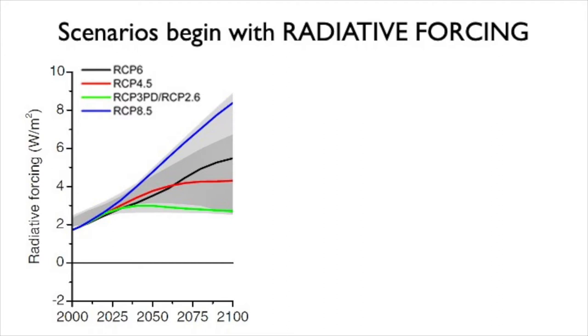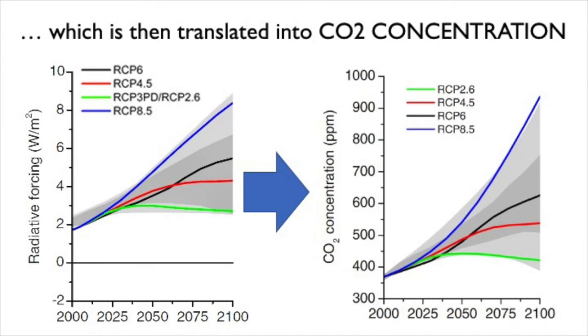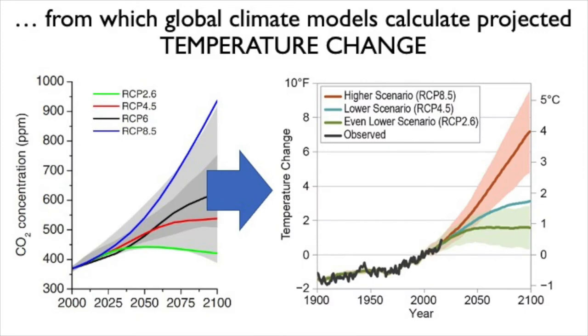Here are figures showing how this translation happens. The scenarios are radiative forcing scenarios in watts per meter squared — an RCP 6 means it reaches 6 W/m² by end of century, and RCP 8.5 reaches 8.5. These are first translated into carbon dioxide concentrations in the atmosphere, where the highest scenarios go up exponentially to maintain the same level of radiative forcing. Then the CO₂ concentrations go into climate models, which translate them into global temperature.